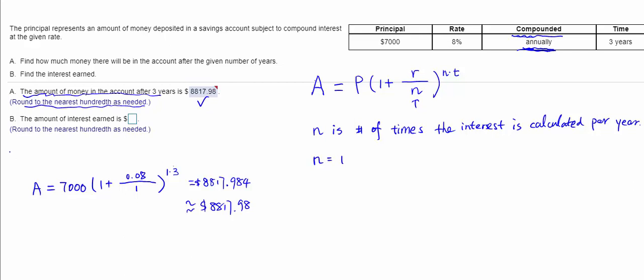The second part is the amount of interest earned in these three years. The amount deposited was $7,000, but after three years there are $8,817.98 in the account. The $7,000 grew. So how much did it grow?